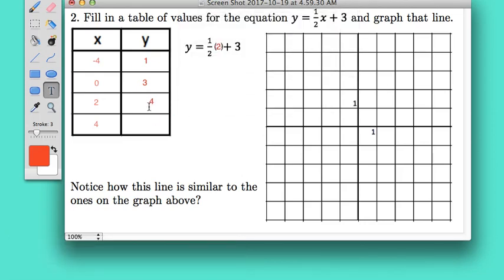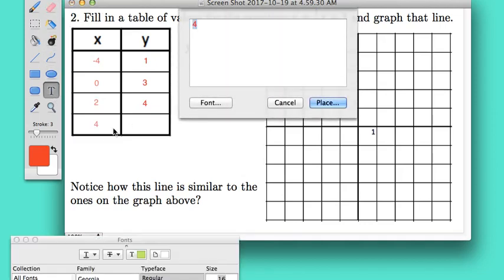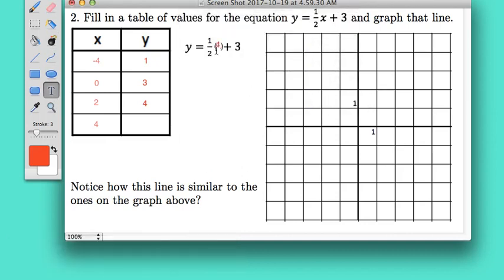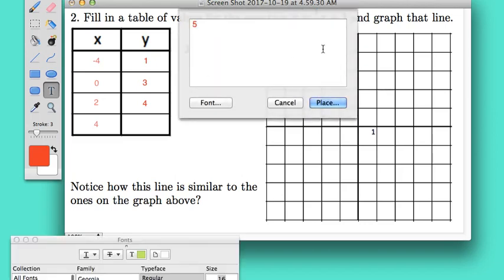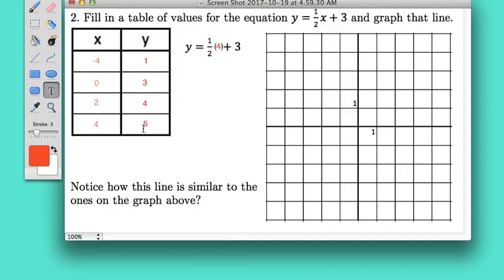And lastly, if I plug four in there instead of two, I erase my two and replace this x in this equation with four. Then when I put that in, I do one-half times four—half of four is two—I add three onto that and I get five, which means my y here should be five. So that's me filling in the table of values.